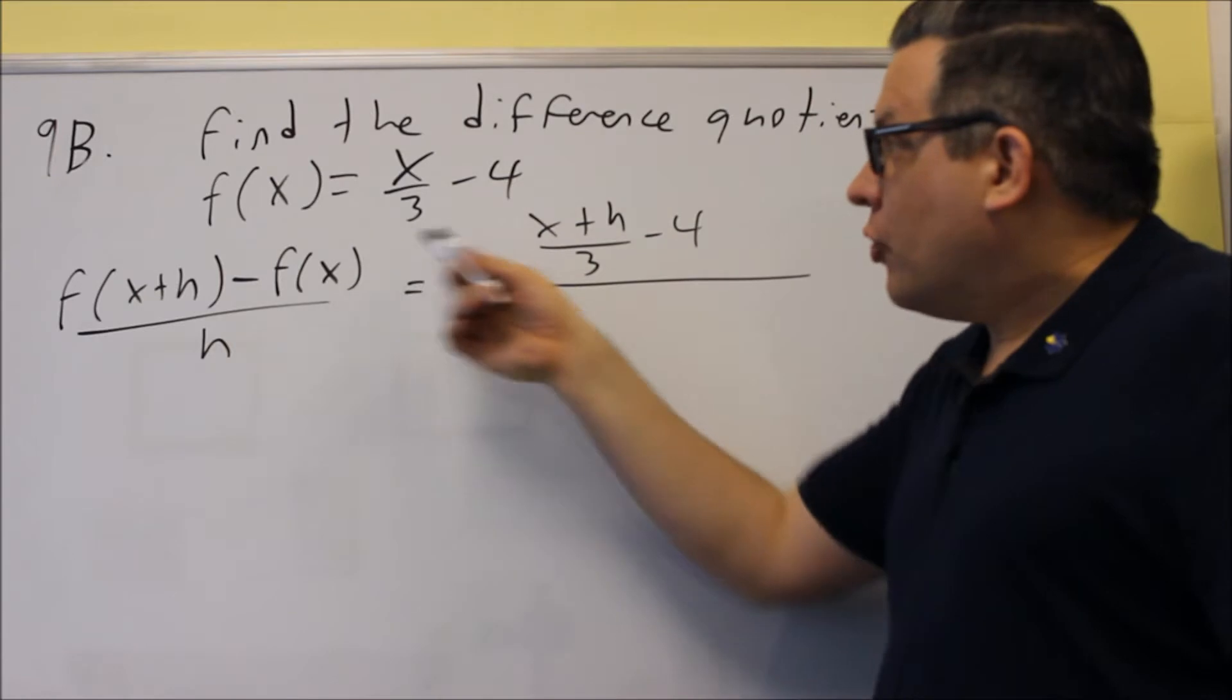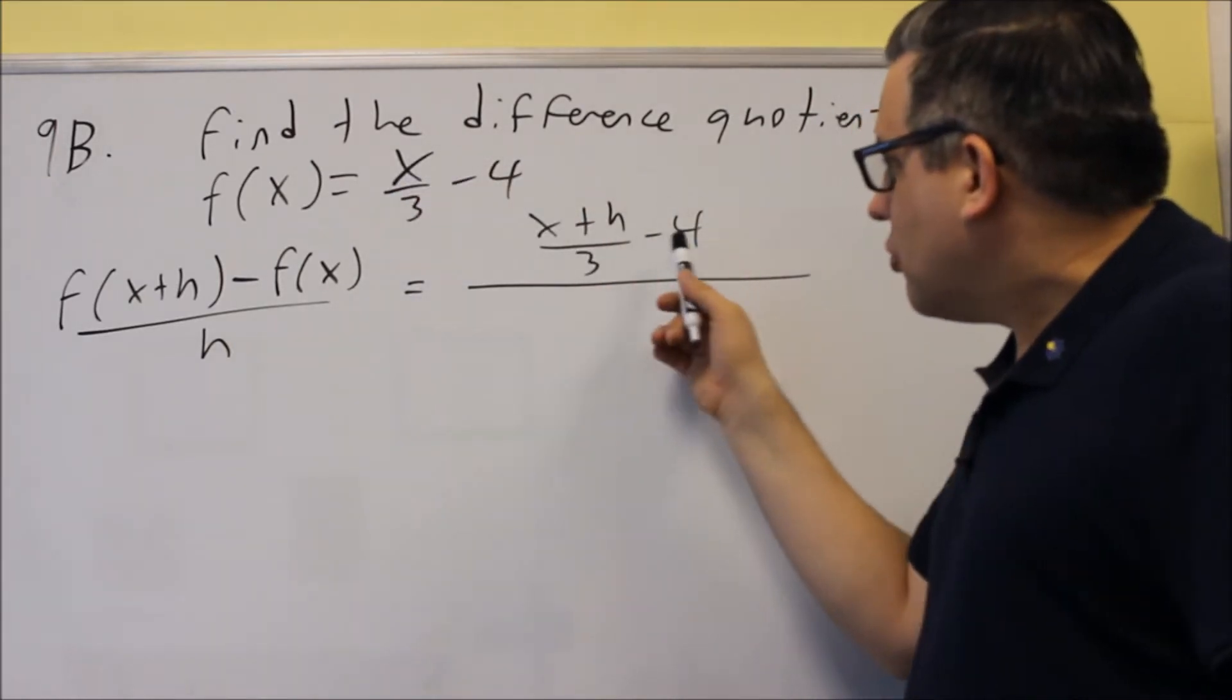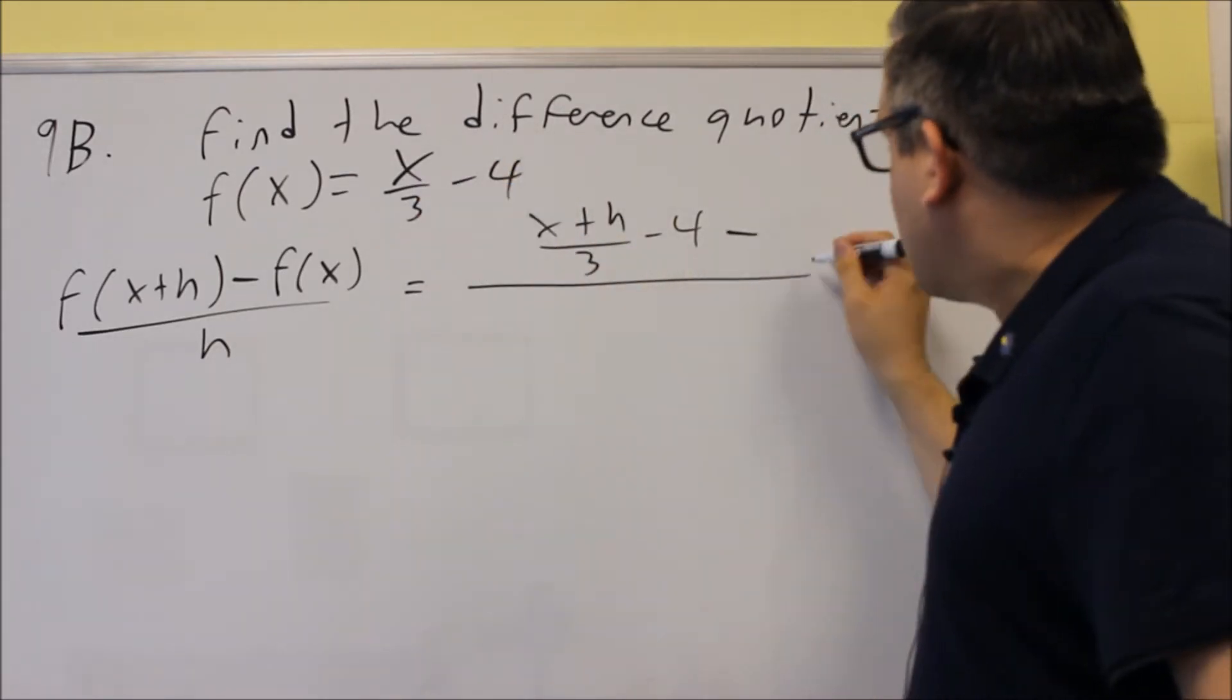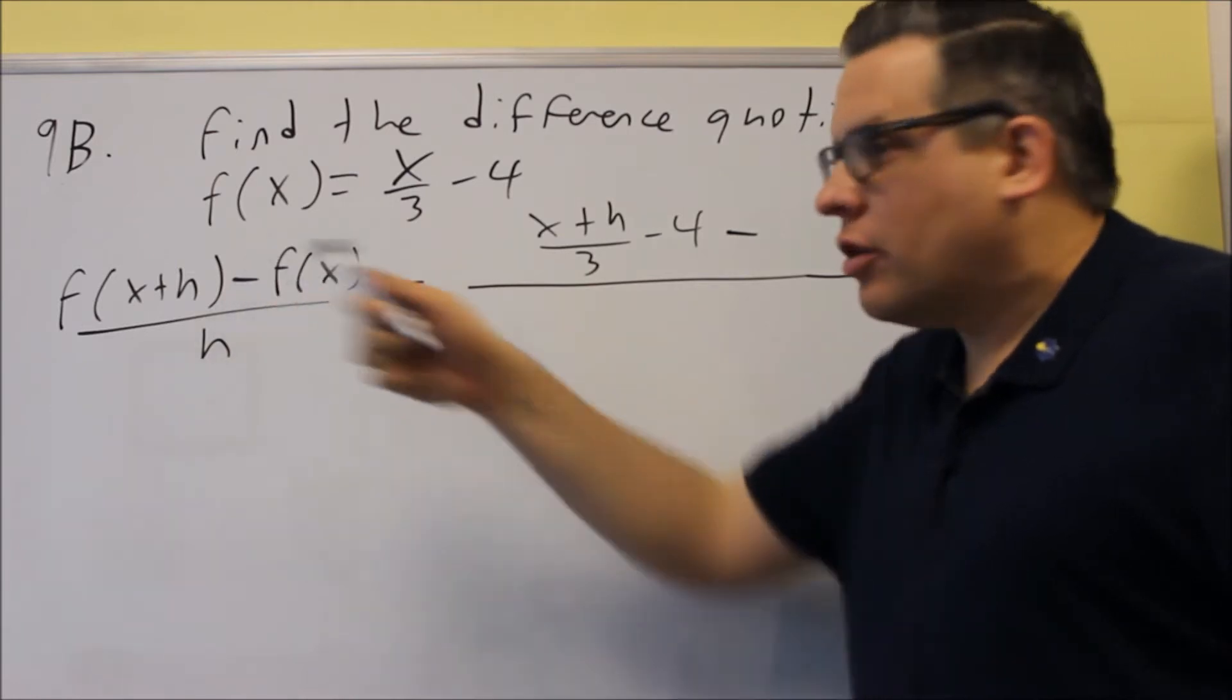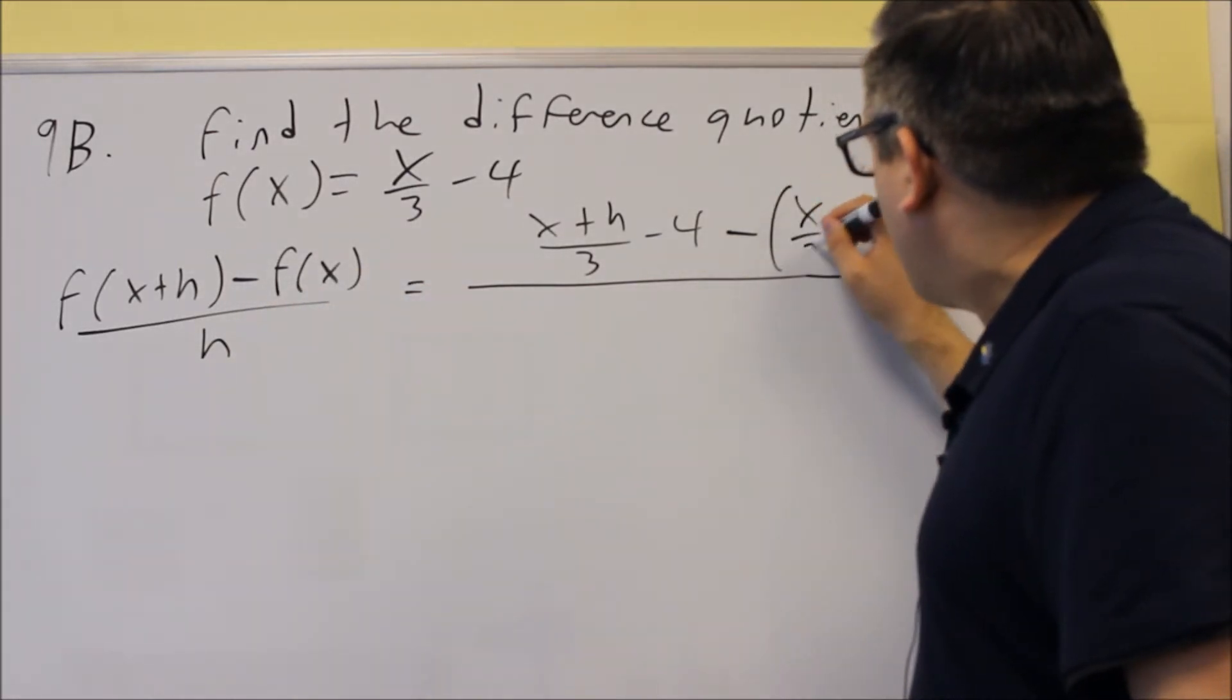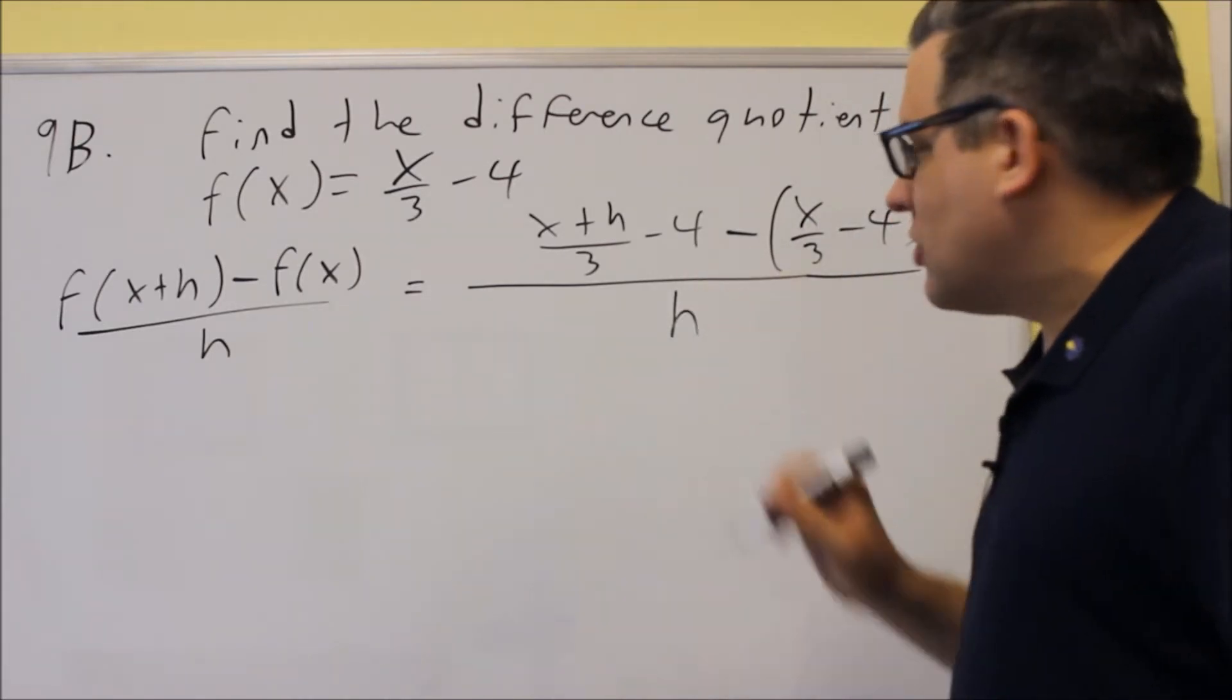So, you've got the original function with x plus h put into it. So, you need to make sure you do the minus 4 as well because that's all part of the formula. You put a minus sign. The minus sign would be the one in the difference quotient formula there. And then you put x over 3 minus 4. That's going to be your f of x. And then all this is going to be over h.